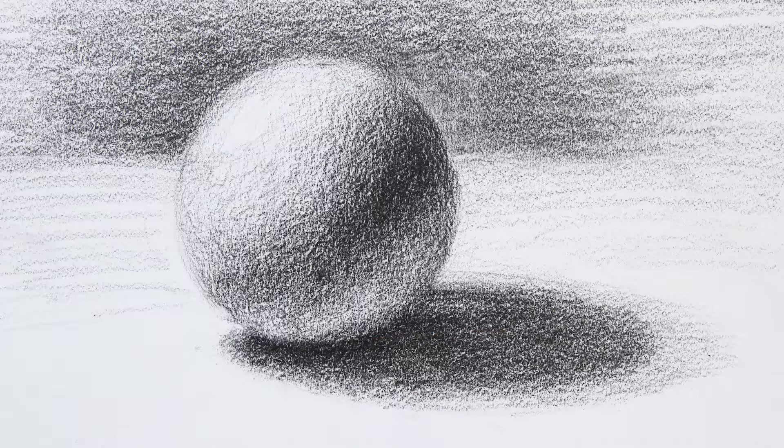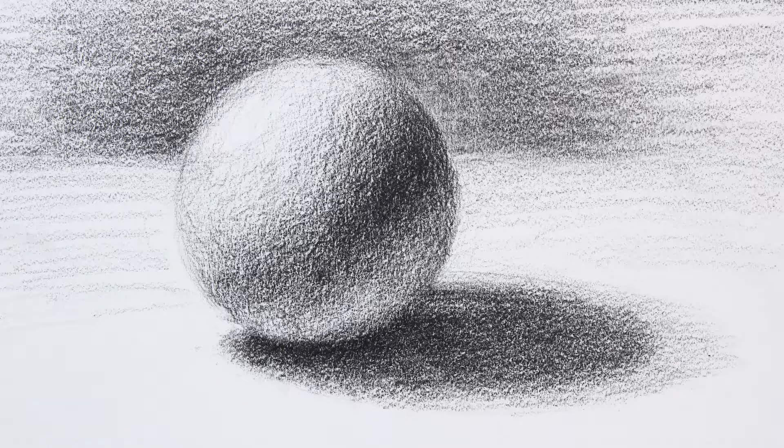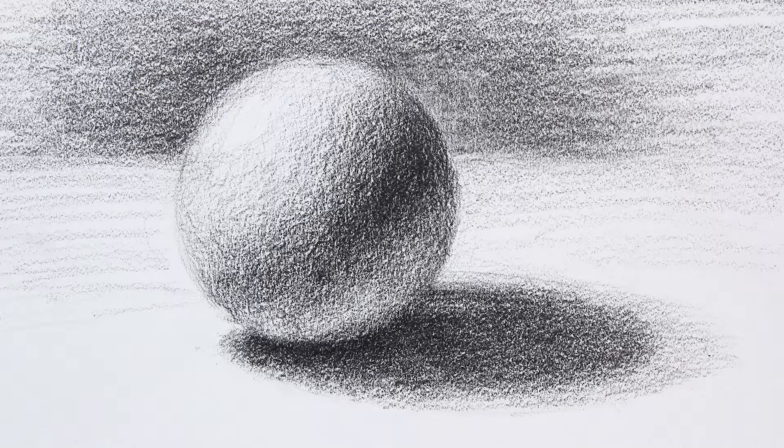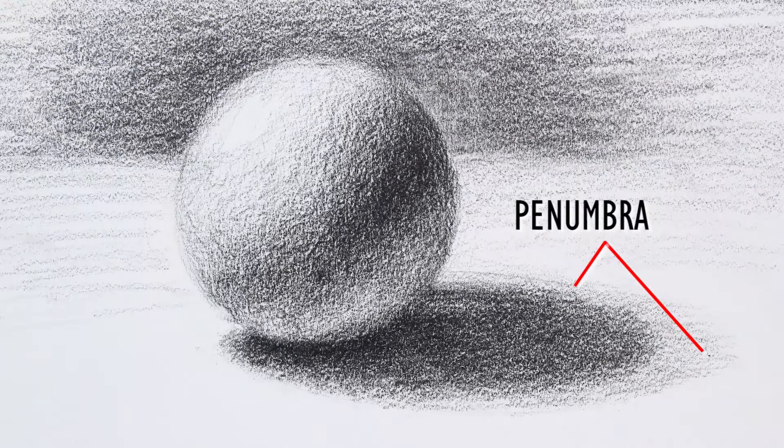One other detail I'll point out is at the very edge of the cast shadow. See how there is a hazy blurred section of lighter shading around the outer edge of the cast shadow? This is called the penumbra.